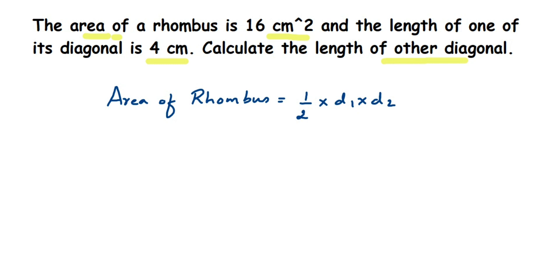So half into d1 multiplied by d2. Here d1 and d2 are diagonal lengths. And here in the question we have given the area of rhombus, so area is 16 centimeter square.